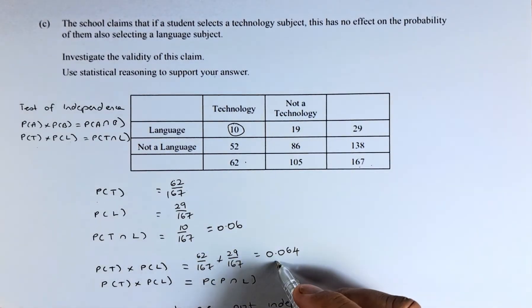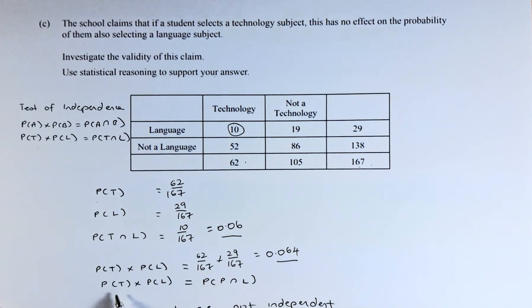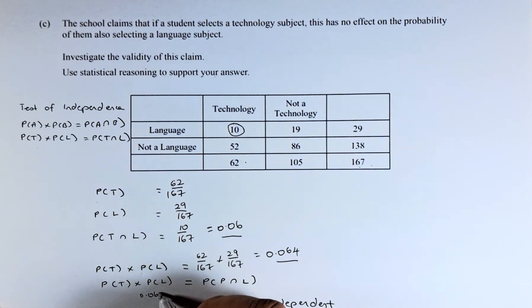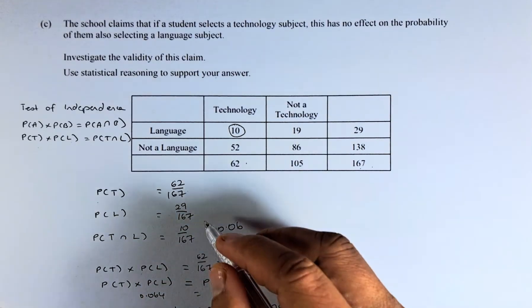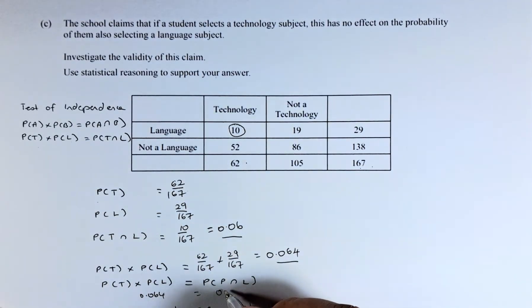So, the probability here and here should be the same. Probability of T times L is 0.064. Probability of T and L is 0.06. They are not equal.